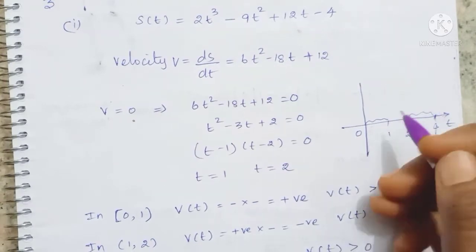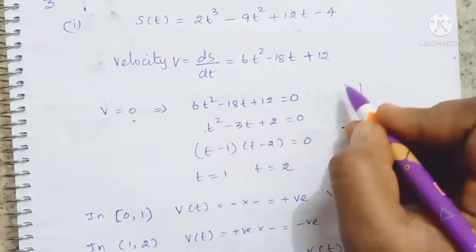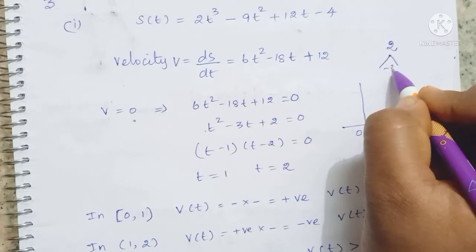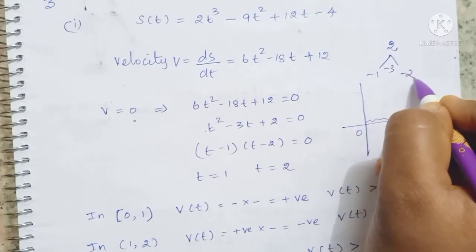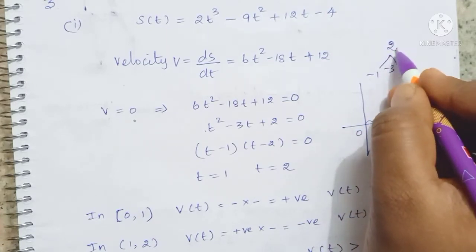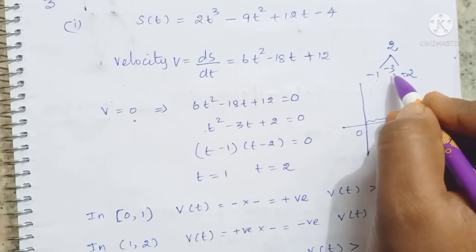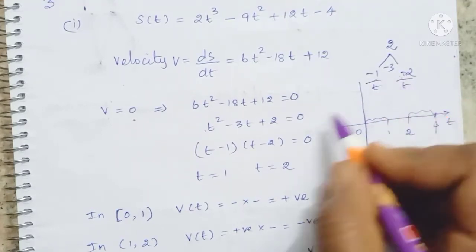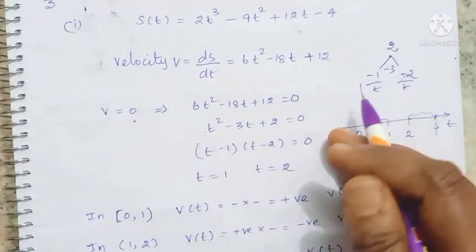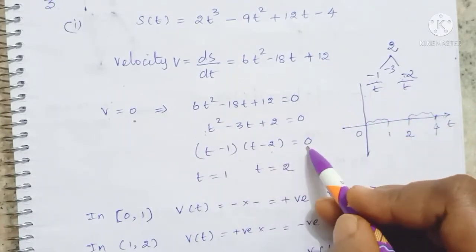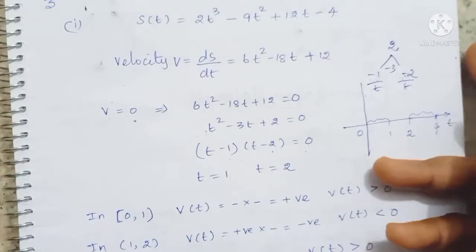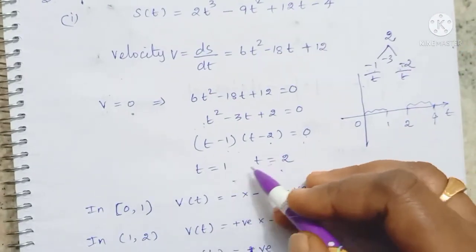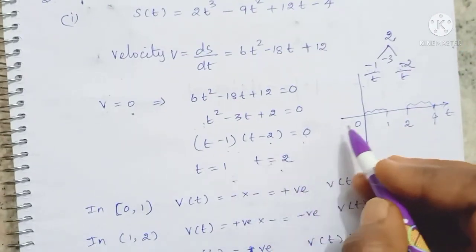Factorizing t squared minus 3t plus 2 equals 0: we need two numbers that multiply to 2 and add to minus 3, which are minus 1 and minus 2. So we get t minus 1 times t minus 2 equals 0. Therefore t minus 1 equals 0 gives t equals 1, and t equals 2. So velocity is zero at t equals 1 and t equals 2.